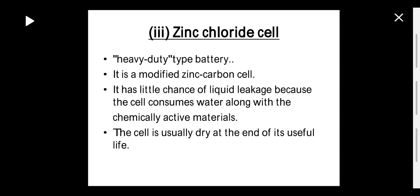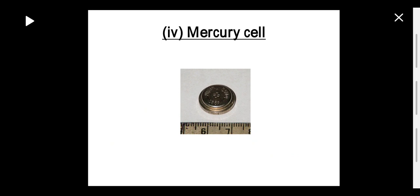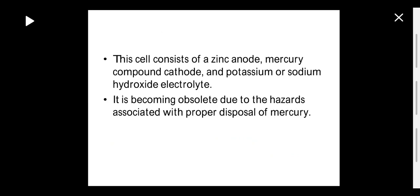The next type is the mercury cell, also called a button-type battery, used in wristwatches and similar equipment. This cell consists of a zinc anode, mercury compound cathode, and a potassium or sodium hydroxide electrolyte. It is becoming obsolete due to hazards associated with the proper disposal of mercury. Nowadays these kinds of batteries with mercury composition are no longer commonly used.